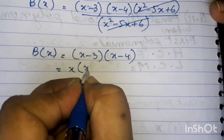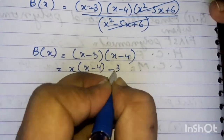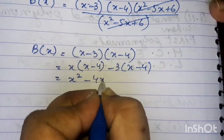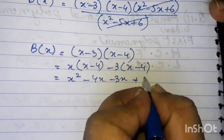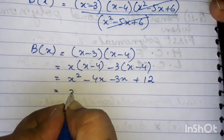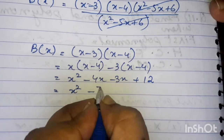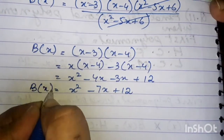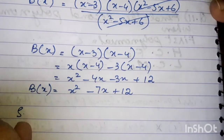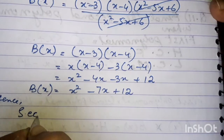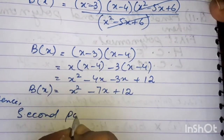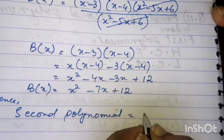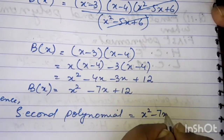So x multiplied by x minus 4 and minus 3 multiplied by x minus 4 — applying the distributive property — it will become x squared minus 4x minus 3x plus 12. Combining like terms, this gives x squared minus 7x plus 12. Hence the second polynomial is equal to x squared minus 7x plus 12.